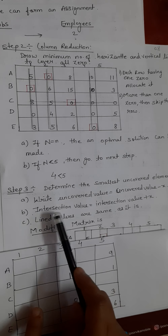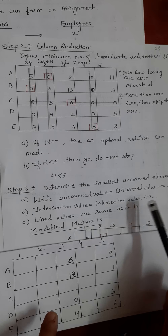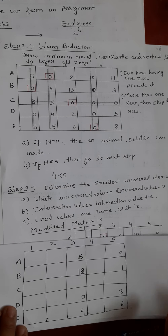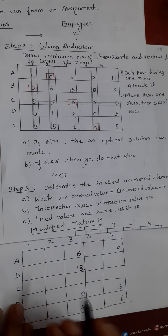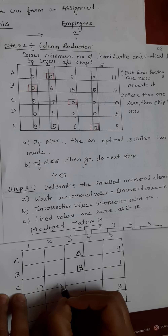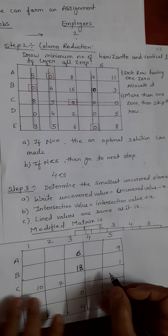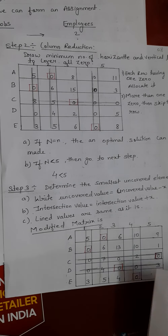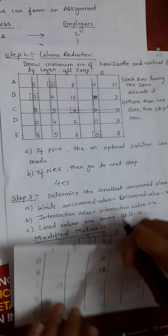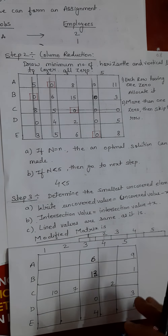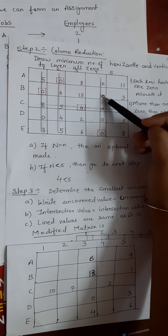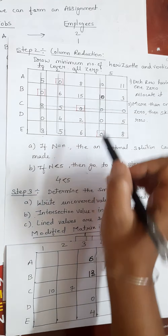The next rule is: intersection value equals intersection value plus x. Our intersection values are 8, 5, and 0. We add 2 to each of these three intersection values. The lined values remain the same: 5, 0, 0, 3, 0, 6, 4, 5, 10, 10, 0, 0. Wherever we drew a line, those are our lined values.